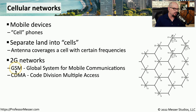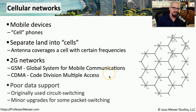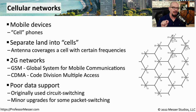Some of the original cellular networks were called 2G networks, and they consisted of two global standards. One of these standards was GSM, or the Global System for Mobile Communications, and the other one is CDMA, or Code Division Multiple Access. Both of these standards were very good for voice communication, but they had very limited support for sending data over these wireless networks. They were originally circuit switch networks and really had to be upgraded to allow some type of data connectivity.